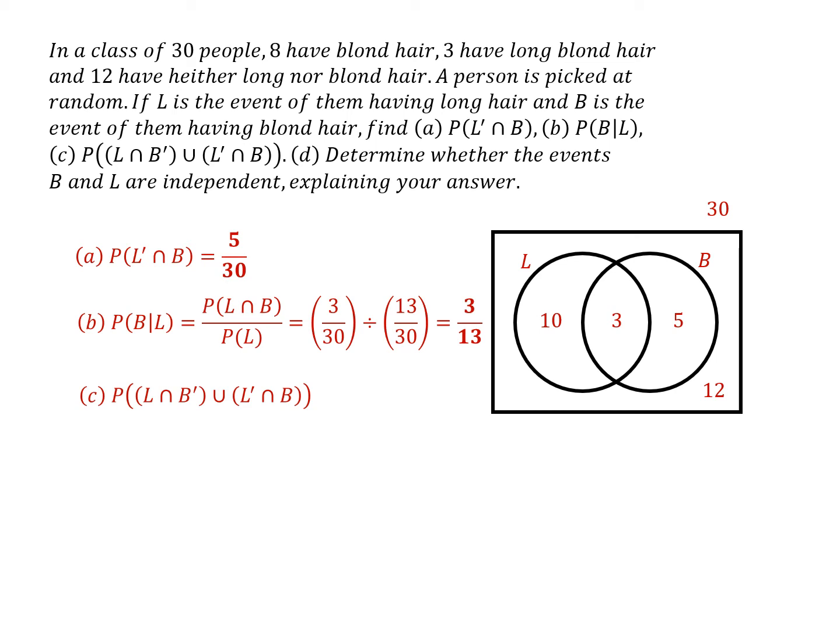Part (c): P((L ∩ B') ∪ (L' ∩ B)). What does that mean? We've got long and not blonde, or not long and blonde. Long and not blonde is these 10 people here. Not long and blonde - we actually calculated that probability in part (a) anyway. So the probability of one or the other, we simply add the probabilities together: 15/30. We could simplify that, but I've left them unsimplified in this answer.